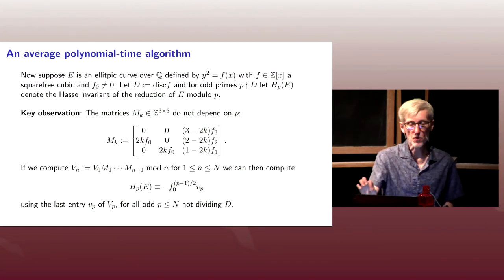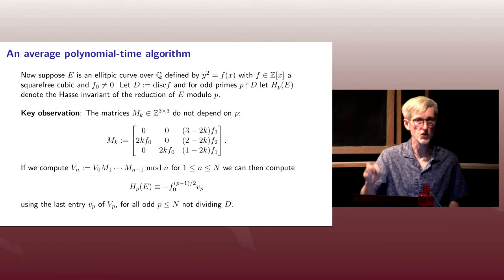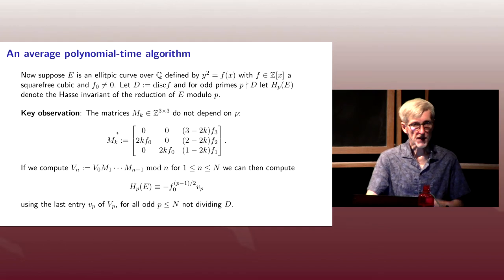I'm going to use the same notation. I'm going to write H sub P of E to mean the Hasse invariant of the reduction of E modulo P, so just an abusive notation.